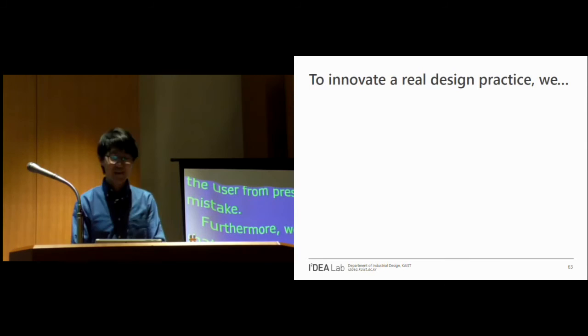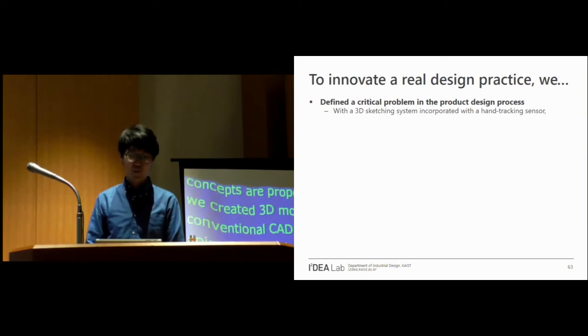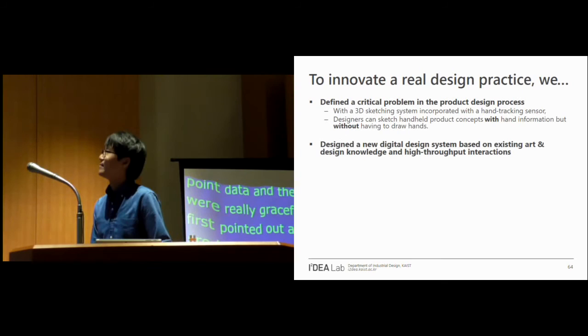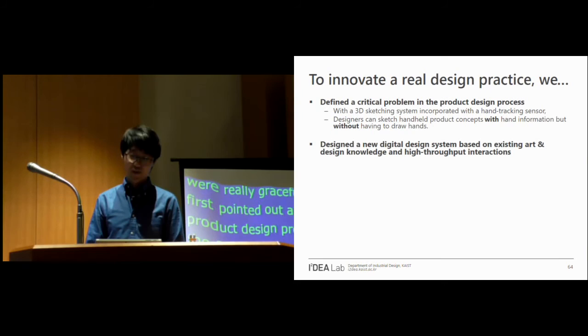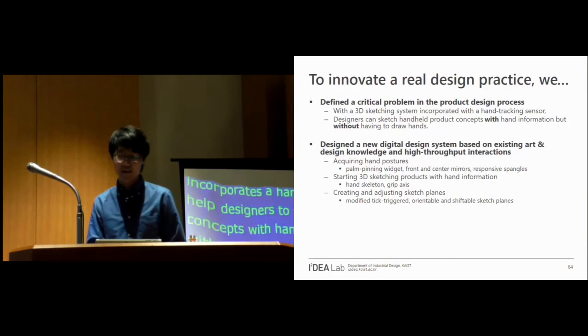So to conclude, we first pointed out a critical problem in the product design process. So we proposed the 3D sketching system that incorporates a hand tracking sensor to help designers to sketch product concepts with hand information but without having to draw hands. Then we used the lessons from the art and design literature to systematically design a new digital design system while considering high-throughput interaction. Full details and overview of all the functions and interactions are included in our paper.